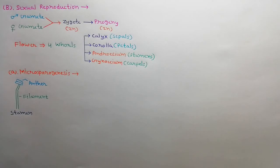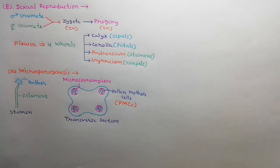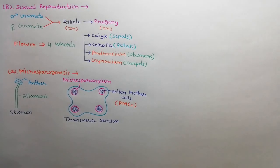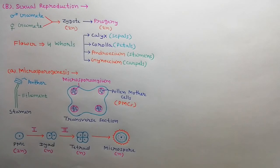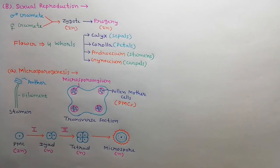The anther is the main part of the stamen. In a transverse section of the anther, there are four microsporangia on four corners. Each microsporangium contains diploid pollen mother cells which undergo meiosis to produce pollen grains. First, the PMC produces two cells by meiosis I, called a dyad. Then this dyad produces a microspore tetrad by meiosis II. All four microspores get separated and mature into pollen grains.